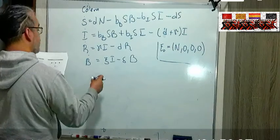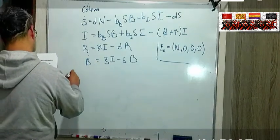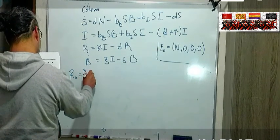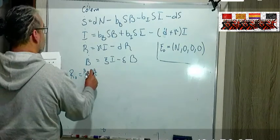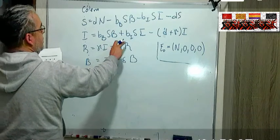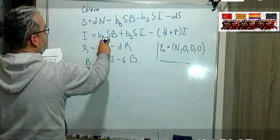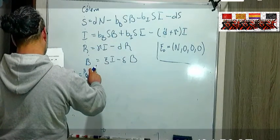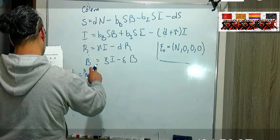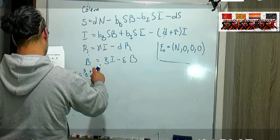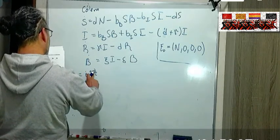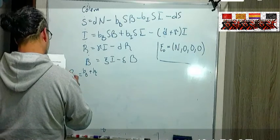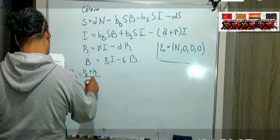Entonces haciendo el cálculo de las matrices obtenemos un R0 que es la beta de las bacterias más la beta de los infectados. También los infectados, un humano se puede infectar ya sea porque tomó agua contaminada o porque tuvo contacto con otro humano infectado por transmisión directa. Este es D más gama.